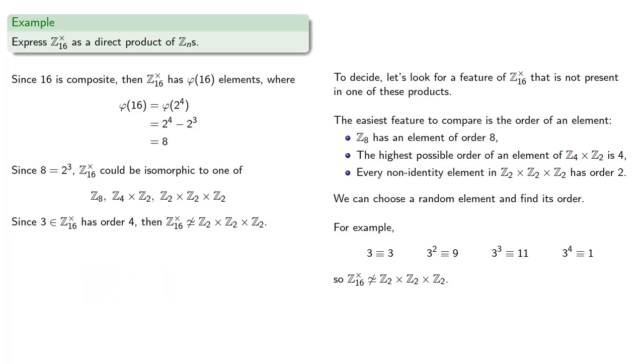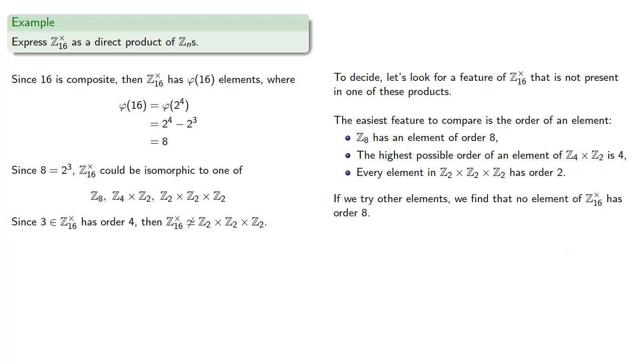This does mean we have to decide between Z4 cross Z2 and Z8. And if we try other elements of our group, we find no element of the integers mod 16 under multiplication has order 8. So we can't be isomorphic to Z8, and so we must be isomorphic to Z4 cross Z2.